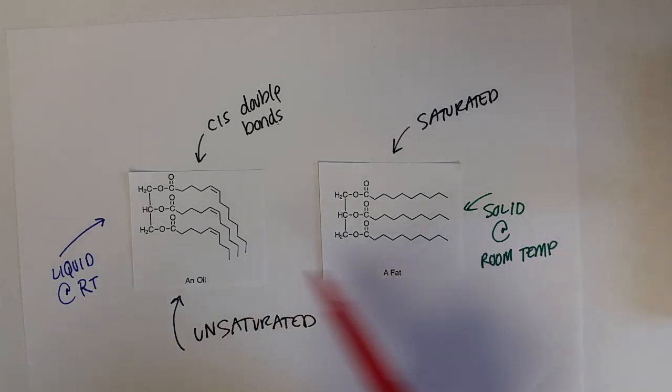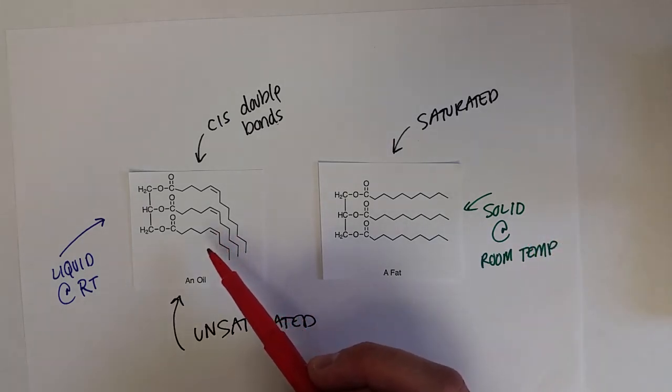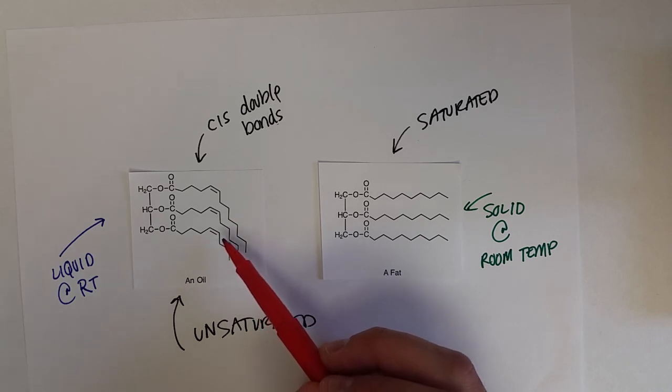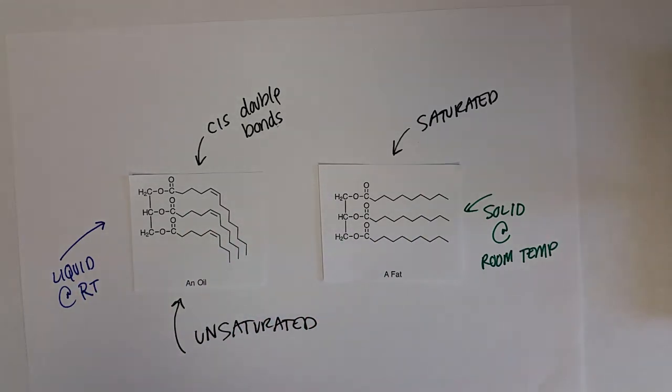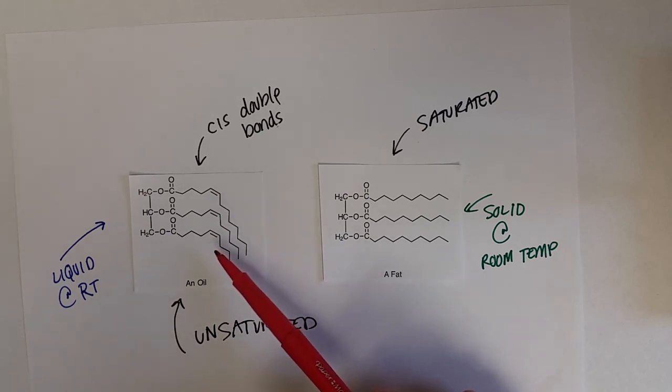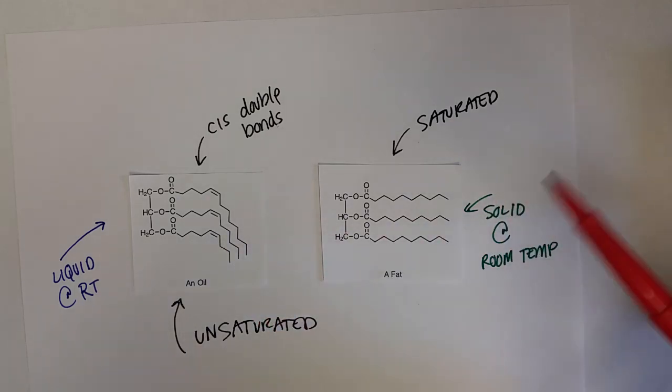Since there's this cis double bond that makes a kink in the chain, it causes the triacylglycerides to not stack up as much, which decreases their intermolecular forces, causing them to be a liquid at room temperature. So the big difference between an oil and fat is that oils are primarily unsaturated fatty acids with cis bonds and fats are primarily saturated fatty acids.